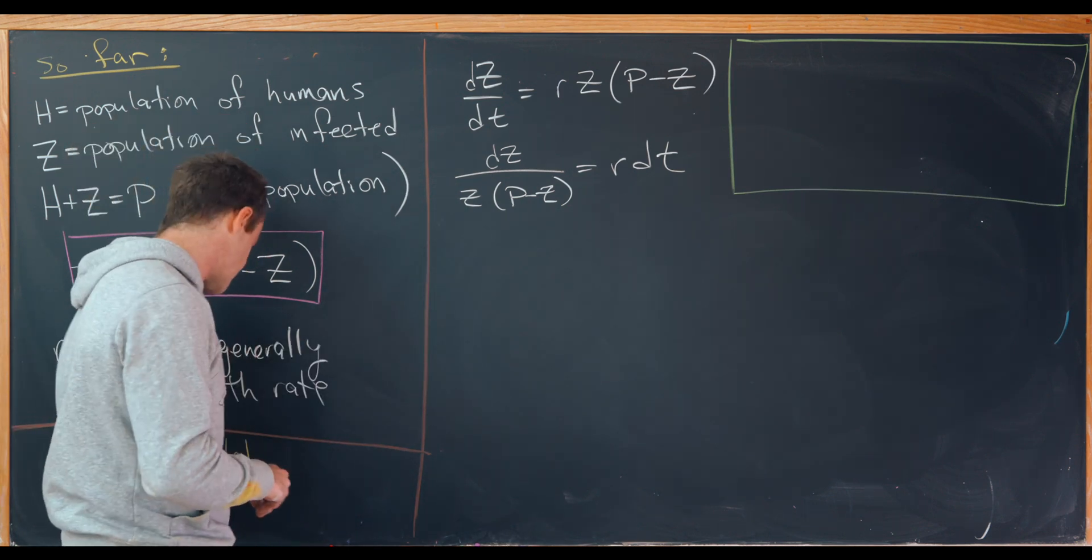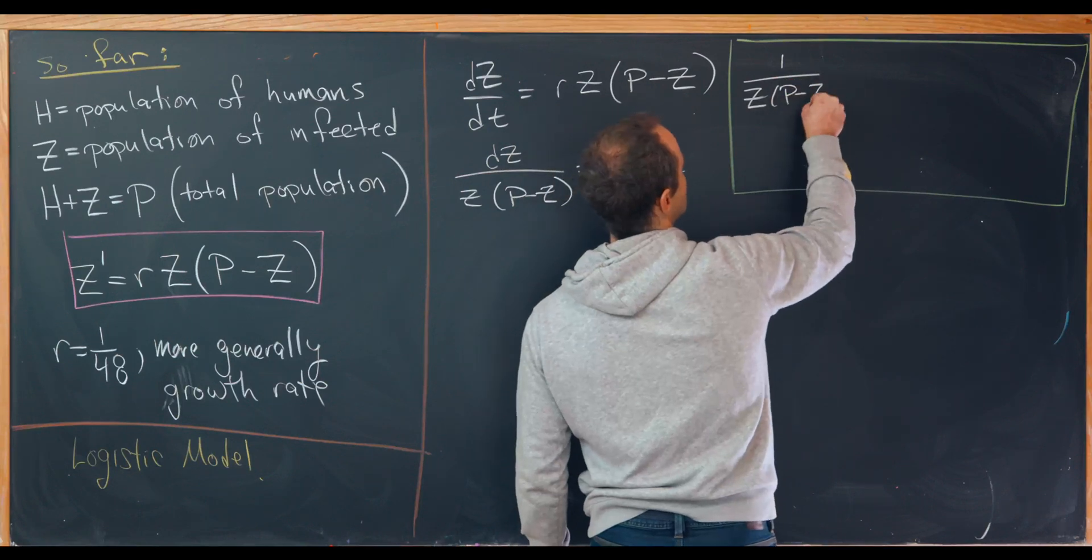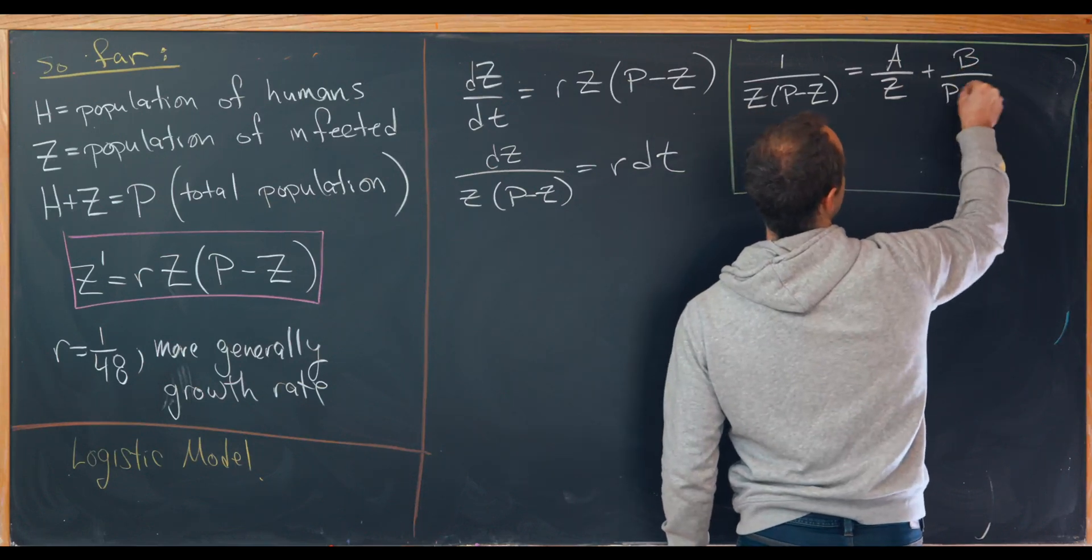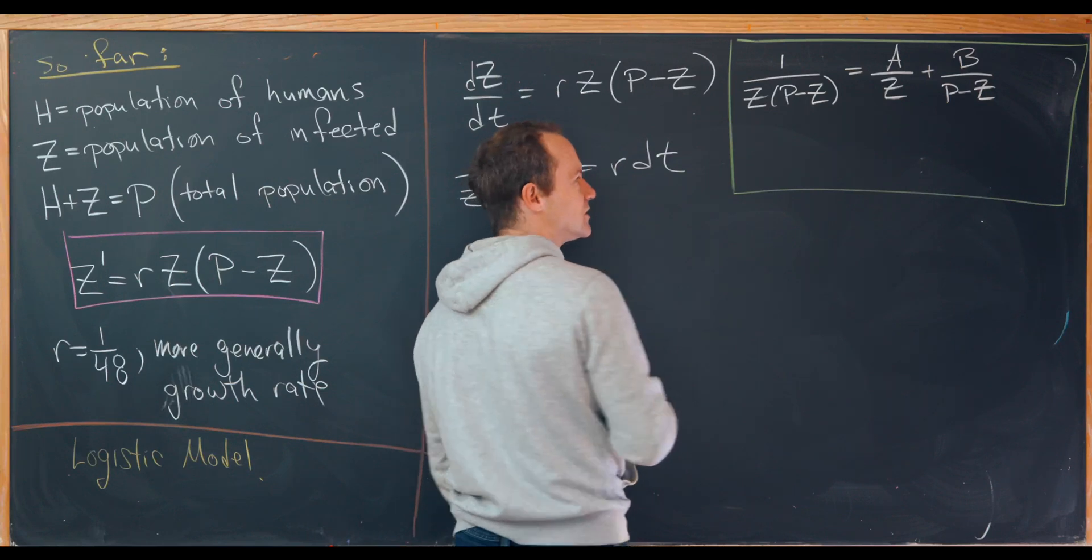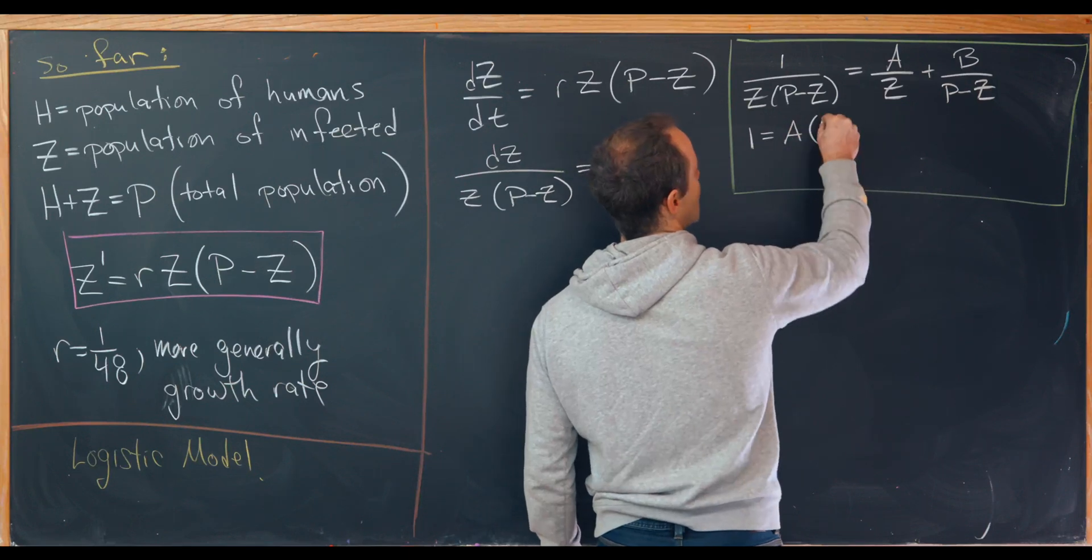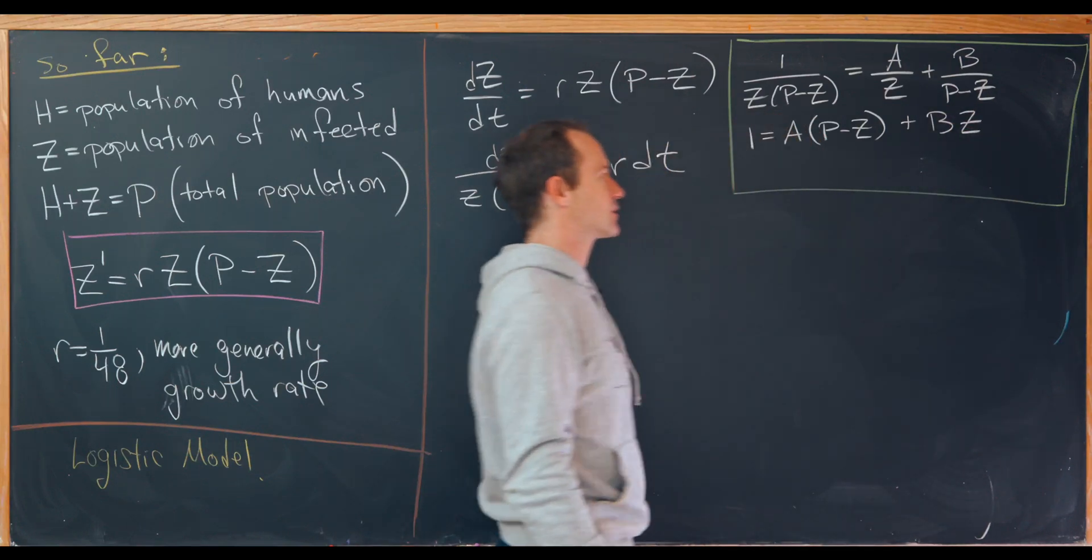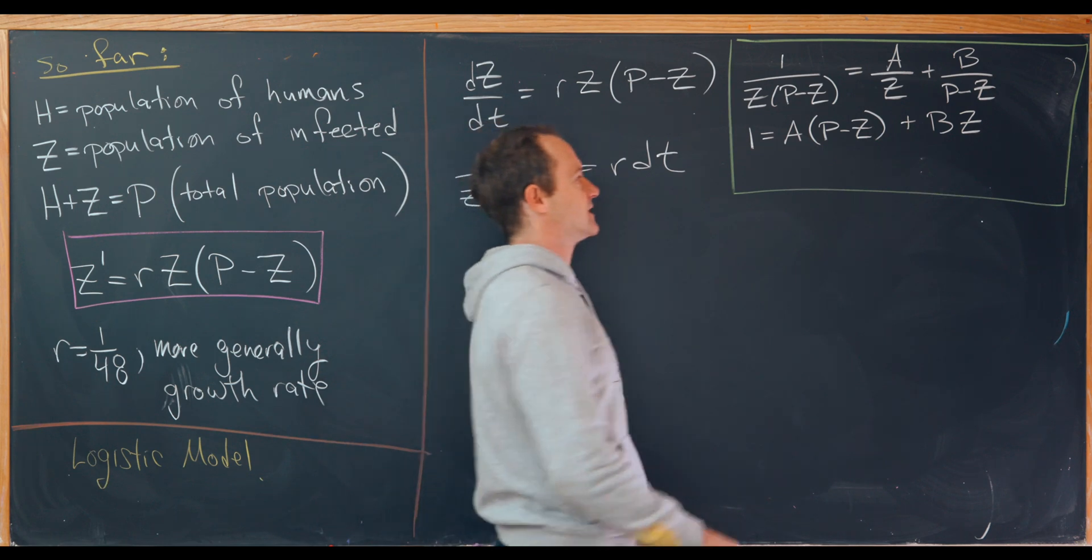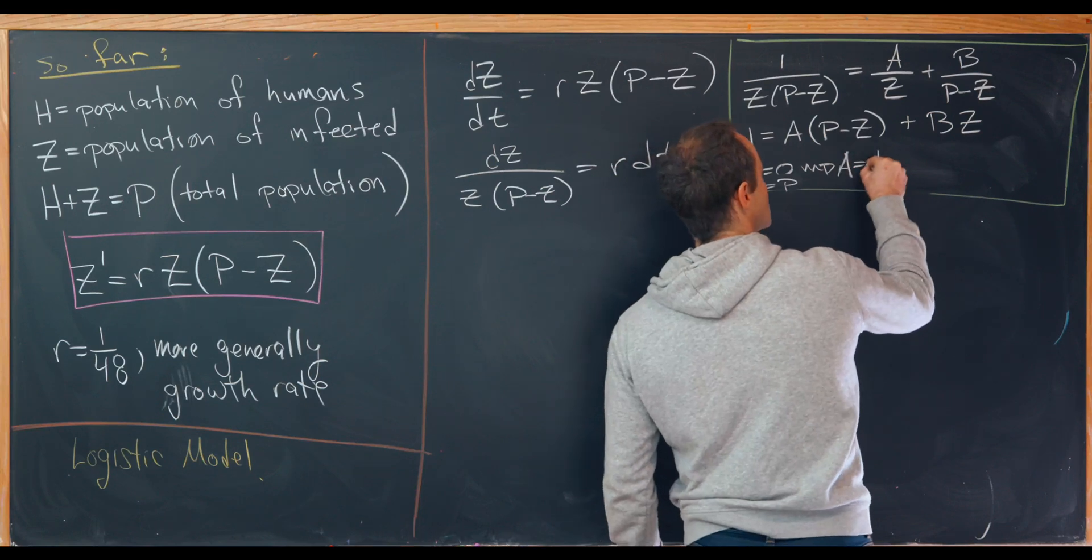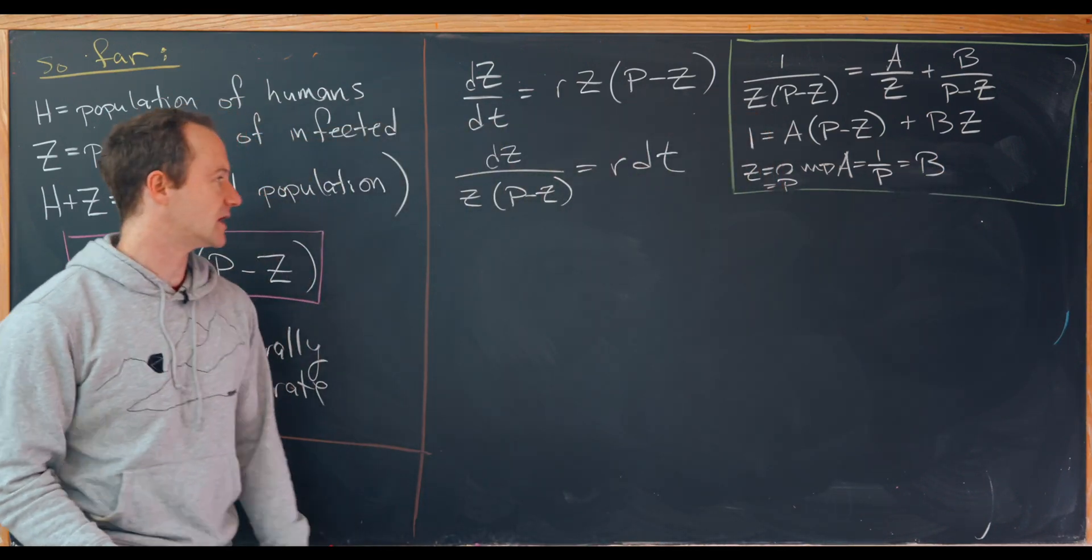So that means we're going to need a partial fraction decomposition over on the left. So maybe we can take 1 over Z times P minus Z and rewrite it as A over Z plus B over P minus Z. So multiplying through to clear the denominators, we'll have 1 equals A times P minus Z plus B times Z. So we're left with something like that. Okay. So now, let's notice if we set Z equal to 0, we'll see that we get A equals 1 over P. And then if we set Z equal to P, we'll see that we get B as also 1 over P. So that's good.